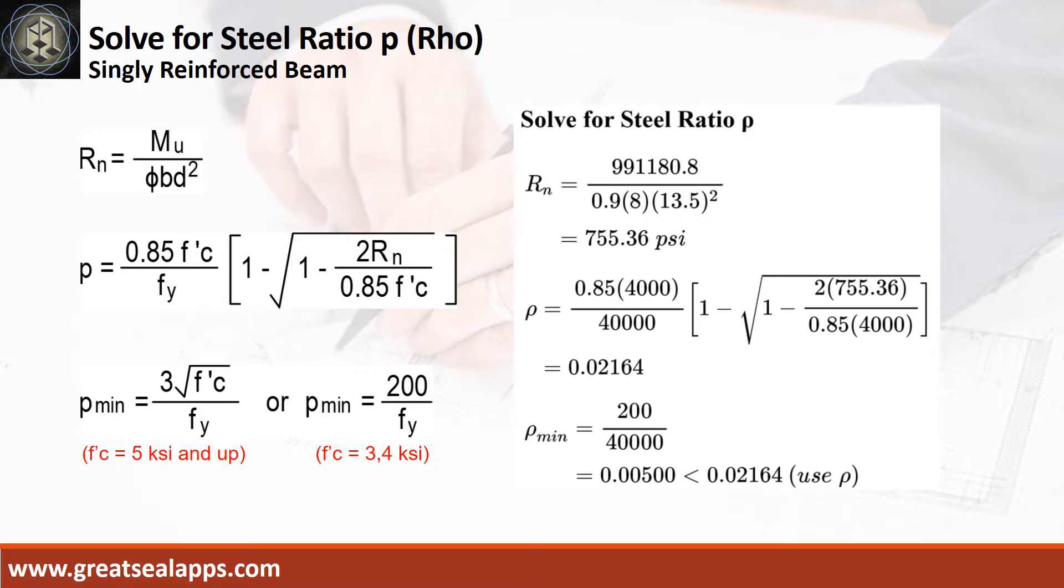resistance factor equals 0.9, b equals 8 inches, and d equals 13.5 inches.